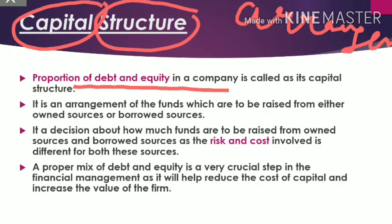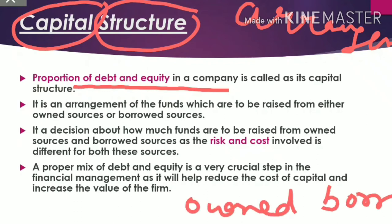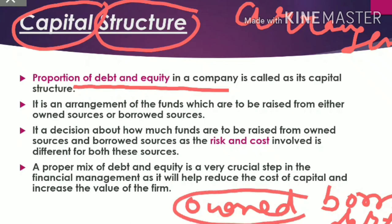The company raises funds from two types of sources: owned sources and borrowed sources. Borrowed sources mean money borrowed in the form of debt. From owned sources, the funds come through equity shares. So capital structure looks at how much money is raised from equity and how much is raised from debt.